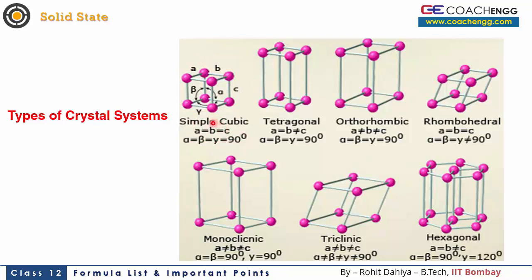There are 6 other types of geometries: tetragonal, orthorhombic, rhombohedral, monoclinic, triclinic and hexagonal. In all these shapes, the parameters of the sides — the length of the sides and the angles at the edges — are given. You can read all these points and remember them.